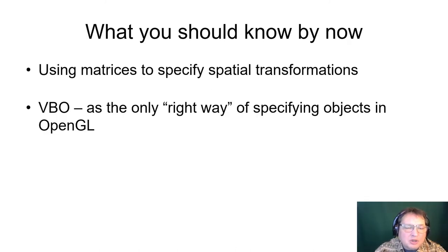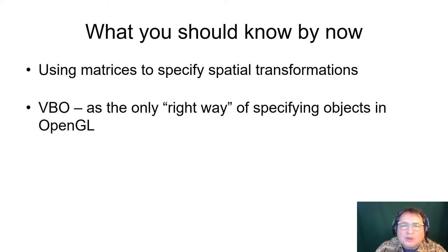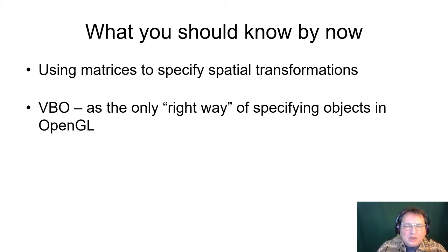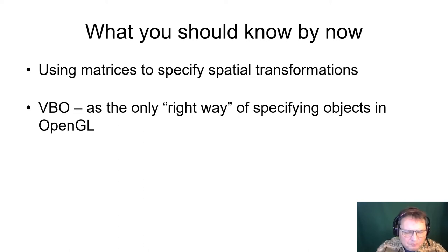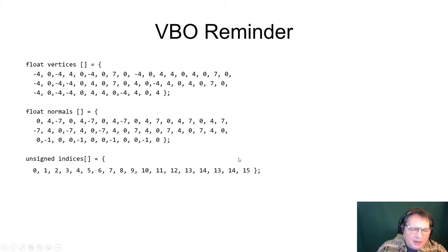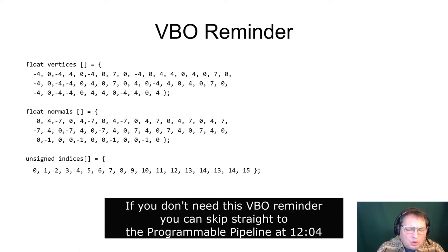To get the most of this lecture, you should have watched our previous lecture materials on matrices and values to specify spatial transformations, as well as the VBOs — the only right way of specifying objects in OpenGL. The links to these lectures should be displayed on screen or in the description below this video. I will provide a quick reminder of the VBO technique because it is quite crucial for your understanding of shaders.